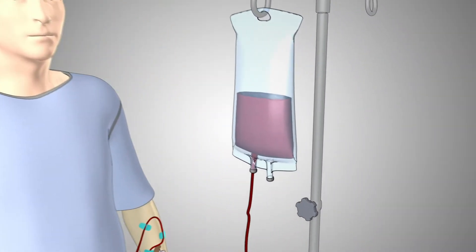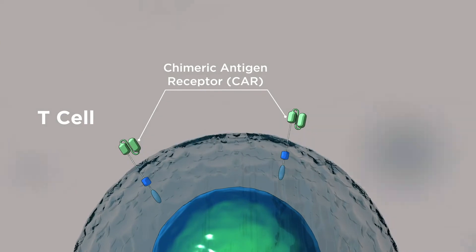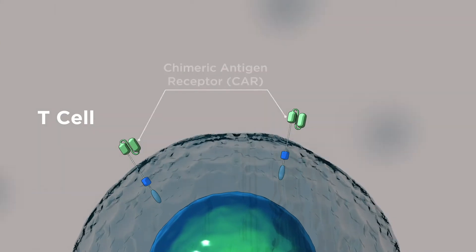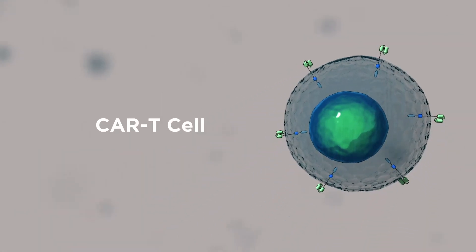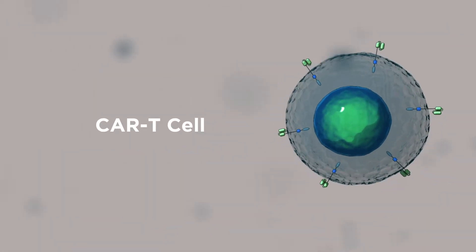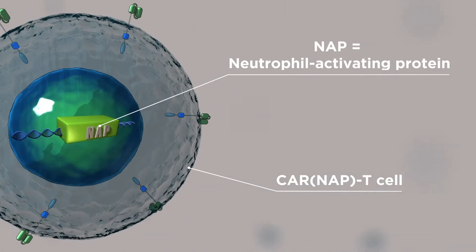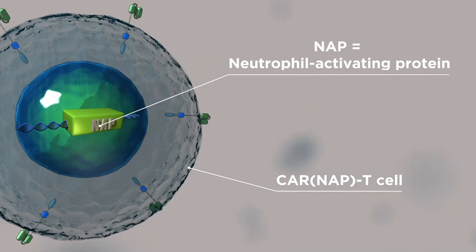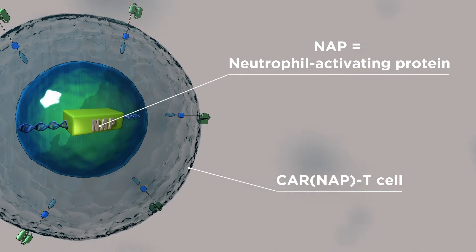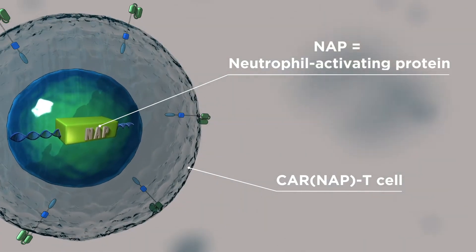T cells can be harvested from cancer patients and engineered so that a chimeric antigen receptor, or CAR, is expressed on their surface. CAR-NAP T cells are CAR T cells armed with NAP, an immune activator derived from Helicobacter pylori.